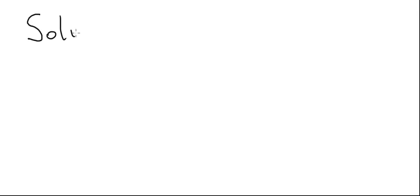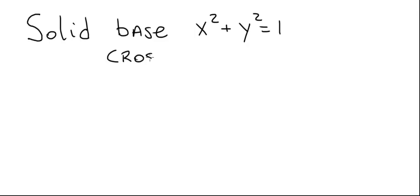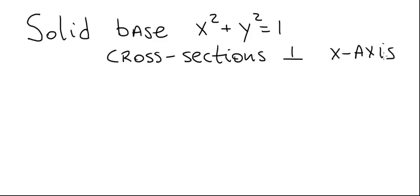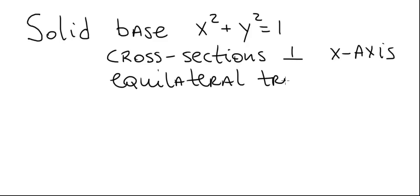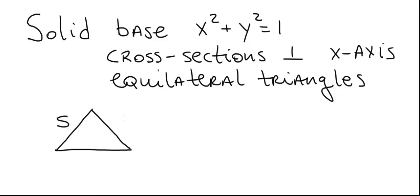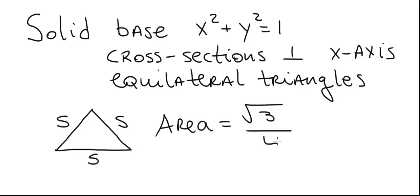Consider a solid whose base is bounded by the unit circle x² + y² = 1 and whose cross sections perpendicular to the x-axis are equilateral triangles. We want to find the volume of this solid. First, recall that when we have an equilateral triangle of side length s, its area is equal to √3/4 times s². We are going to need this fact shortly. Now let's find the volume of the solid using 4 fairly simple steps.